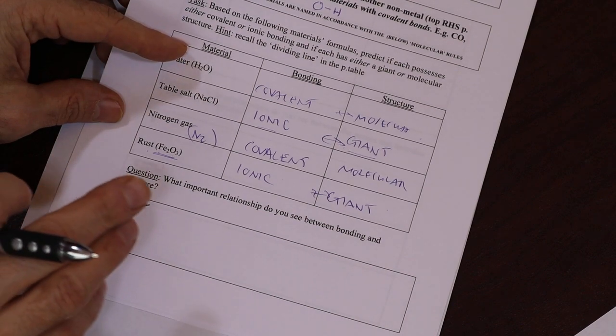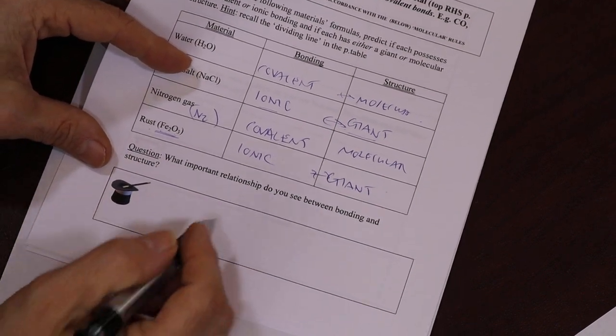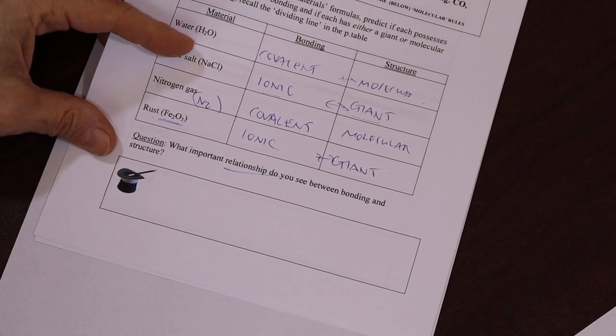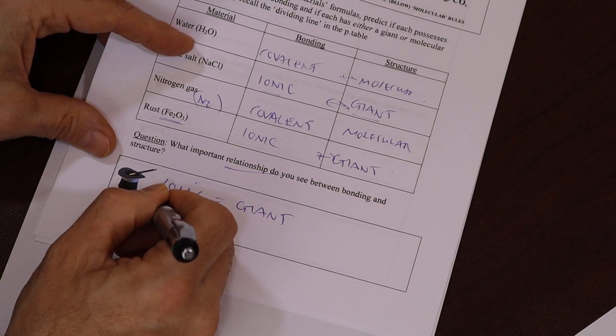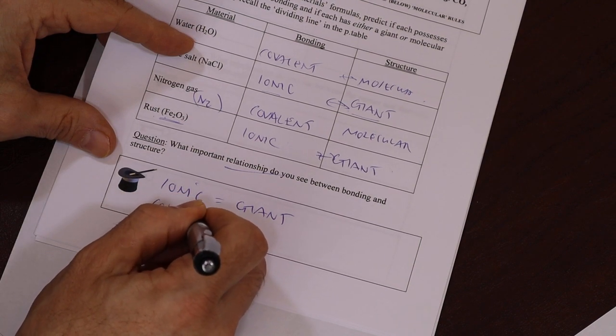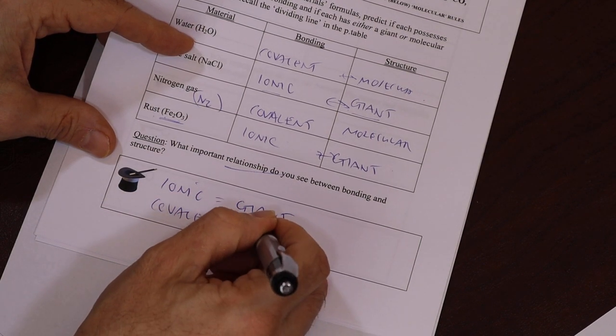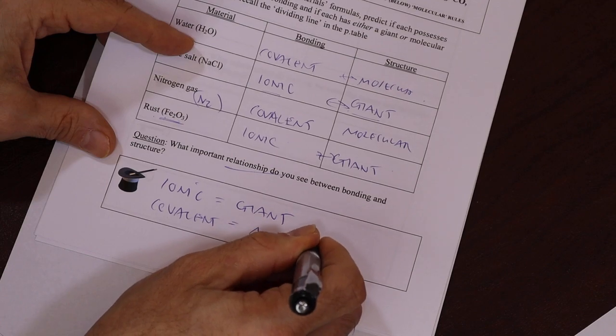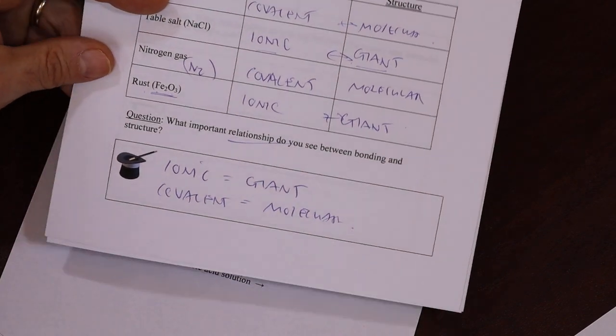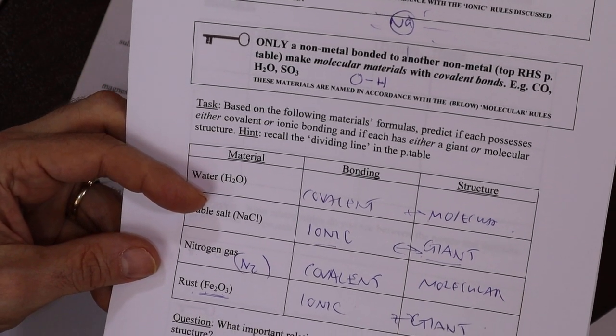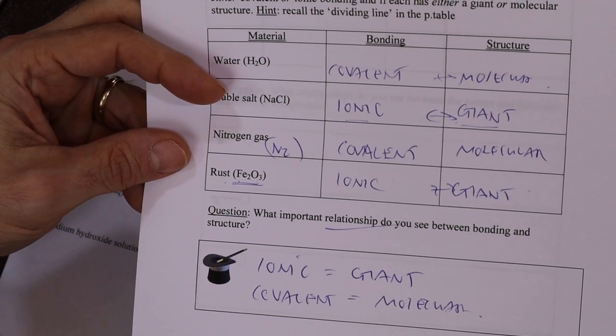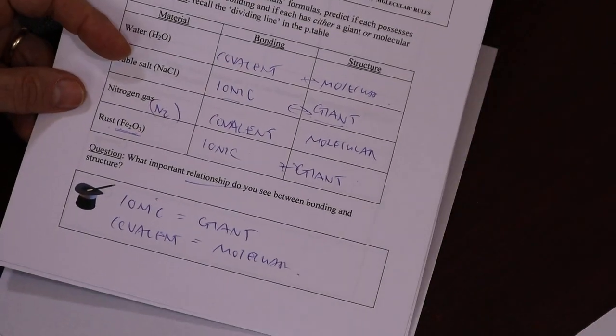So what important relationship do you see between structure and bonding? Ionic equals giant, covalent equals molecular. Okay, so let's bring that up to camera. Remember, you can pause this at any time so you can catch the details. There we go.